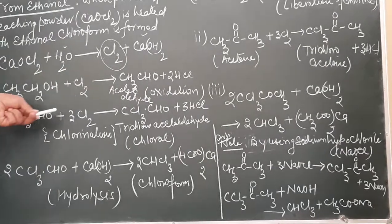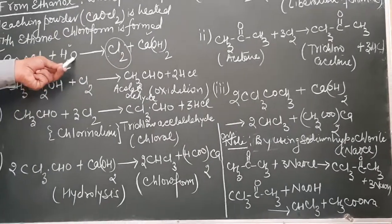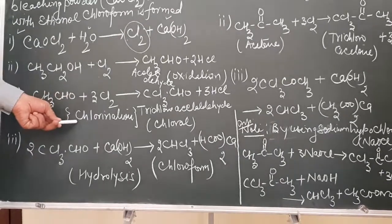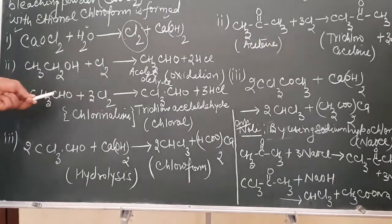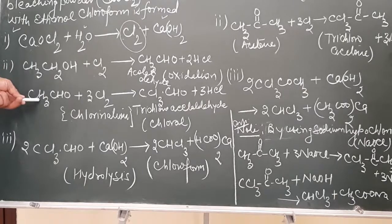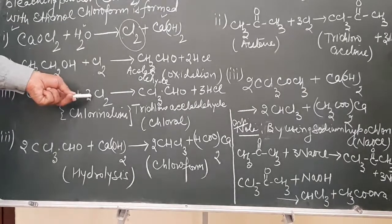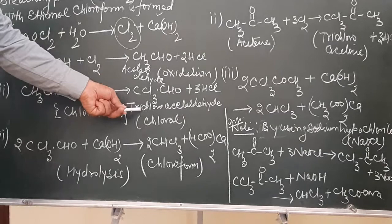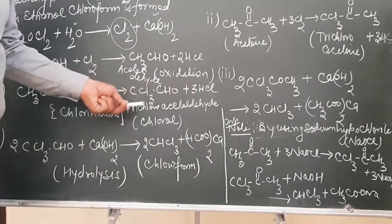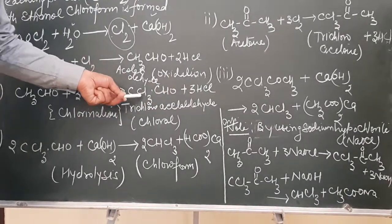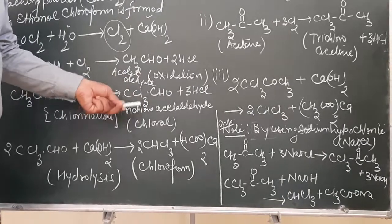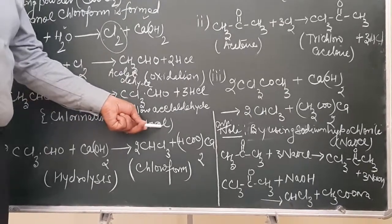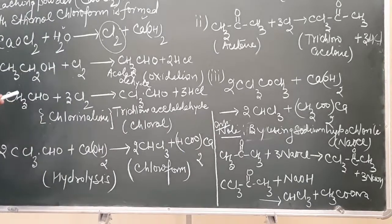In the next step, the liberated chlorine will act as a chlorinating agent, and this step is called the chlorination step. In this step, acetaldehyde reacts with chlorine, and the hydrogen atoms are substituted by chlorine, resulting in the formation of trichloroacetaldehyde, with formula CCl3CHO, which is also known as chloral.